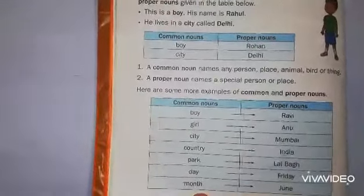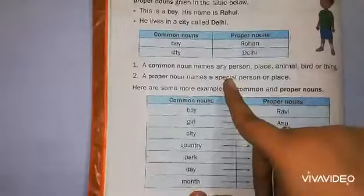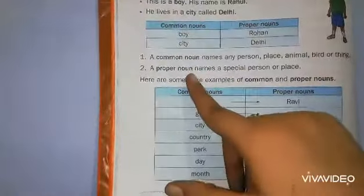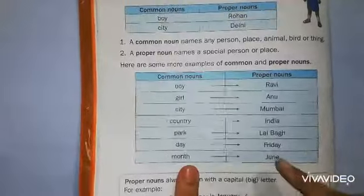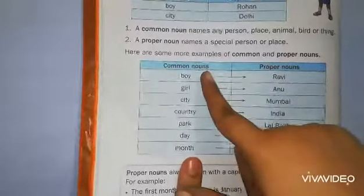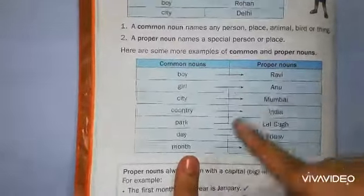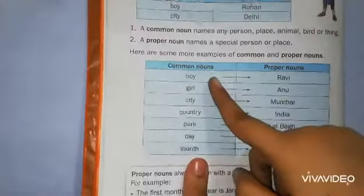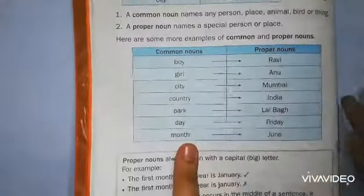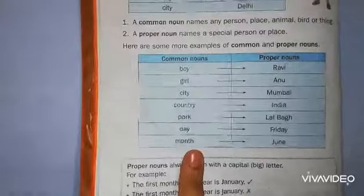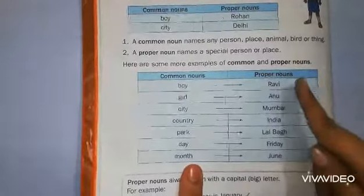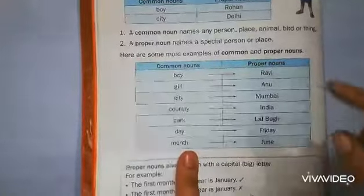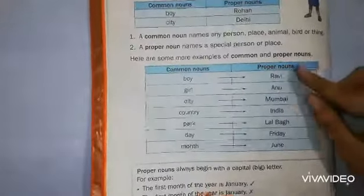What is common noun? A name of any person, place, animal, bird or thing is called common noun. A name of a special person or place, that means any specific person or place is called proper noun.